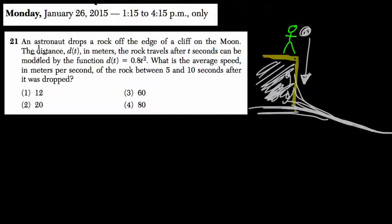But we're told, fortunately, that the distance d(t), so that means the distance based on the time, that's what this notation means. It's in meters that the rock traveled after t seconds can be modeled by the function d(t) equals 0.8t².